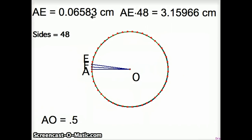He knows that AE is 0.06583. He knows that AO is 0.5. OE you can get with the Pythagorean theorem, and that ends up being 0.50431. Well, knowing those three sides enables us to calculate out this tiny length of AF, which I'm going to do on the side.